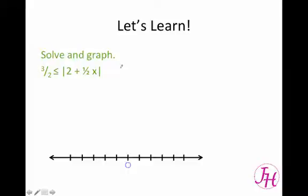Where the last problem was a conjunction, this time we're going to have a disjunction. So our first step is to write 3 halves is less than or equal to 2 plus 1 half x, or negative 3 halves is greater than or equal to 2 plus 1 half x. And we've changed the sign, we make this a negative, we make the opposite, and then we flip the sign to get our second inequality.